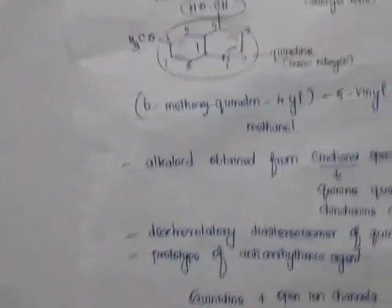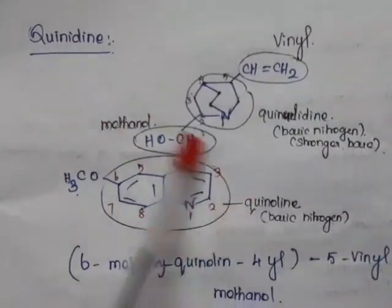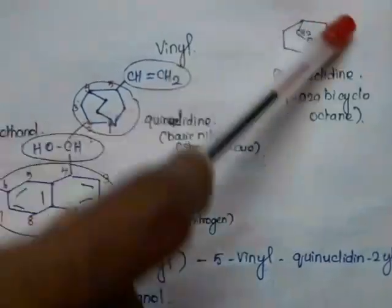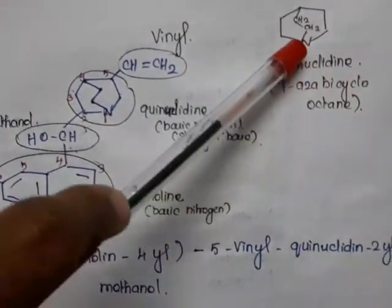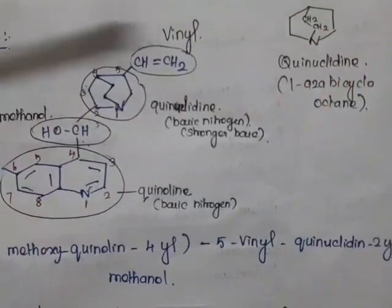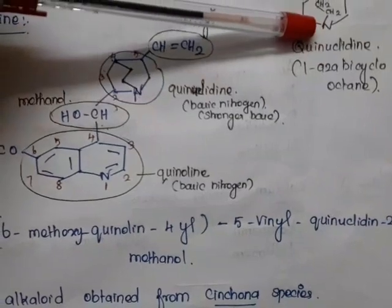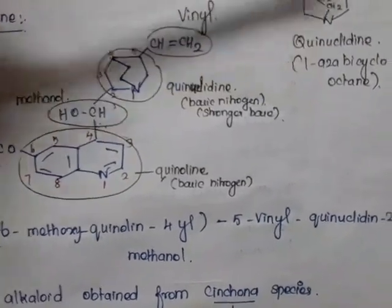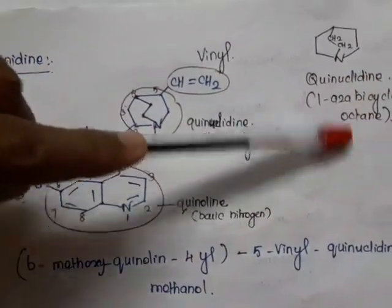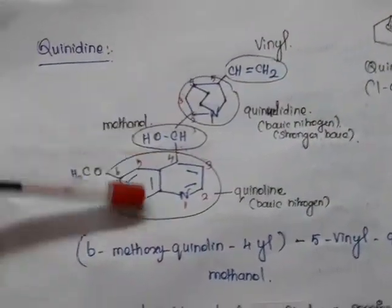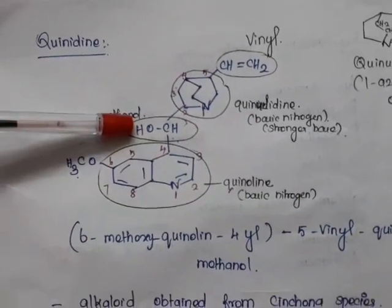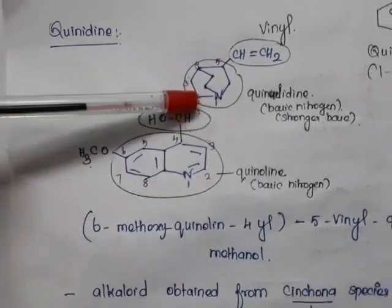Now we'll see the first drug, quinidine. Looking at the structure of quinidine, it contains a quinoline ring and a quinuclidine ring. The quinuclidine ring is a bicyclic system with nitrogen as the heteroatom. Counting the atoms — one through eight — it has eight atoms total, making it a bicyclooctane. With nitrogen at position one, it is called 1-azabicyclooctane. These two rings are connected by a hydroxymethyl group.